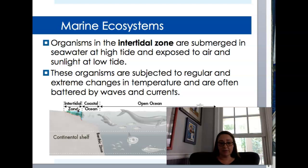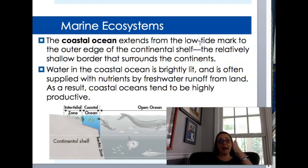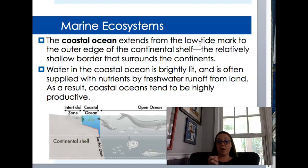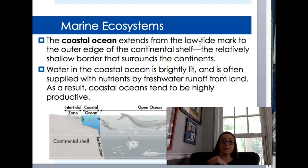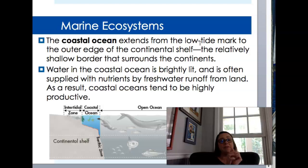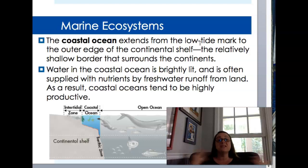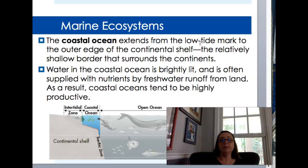The coastal ocean extends from low tide out to the end of the continental shelf. On the East Coast we have a very long continental shelf, so we have a large coastal ocean. On the West Coast it drops very quickly, so they have a tiny coastal ocean and go into open ocean very quickly. That's why people deep sea fishing in Georgia have to go out much farther than they would on the California coast. The coastal ocean gets a lot of sunlight since it's shallow, and receives nutrients from land runoff, making it a very productive area with lots of organisms.